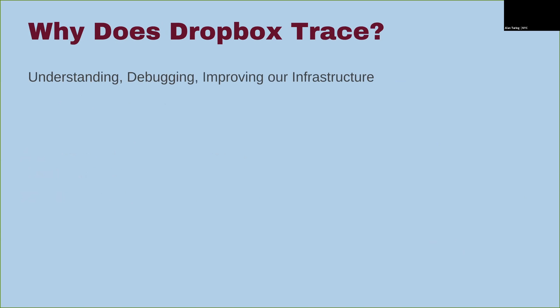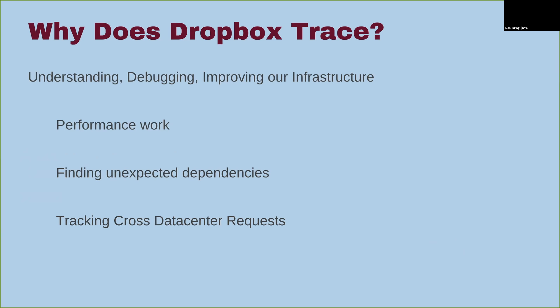Why do we trace? Three main reasons: understandability, debugging, and improving our infrastructure. First, performance work — we use tracing to introspect and find weak points, like a series of serial calls to another service that could be concurrent. Second, unexpected dependencies: Dropbox has been hit by services creeping into the critical path, which then fail and cause outages. We want to use tracing to find those sooner. Finally, we've been using it to track cross-data-center requests, to make sure data moves across data centers in predictable ways.